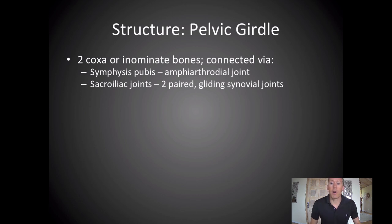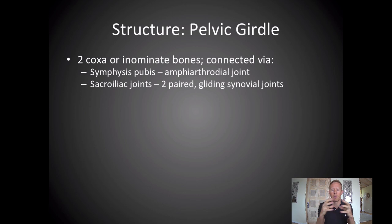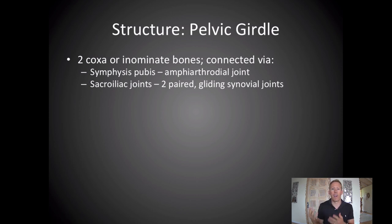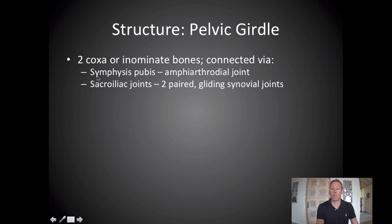When we look at the pelvic girdle and general structure, you have two coxa, or innominate bones — the two bones of your pelvis. We often think of the pelvis as one structure, but it's really two innominate bones coming together. Those bones come together on the front side at the pubic symphysis, which is considered an amphiarthrodial joint — slightly movable. It's not a synovial joint like our shoulder or hip; it's not freely movable. It's a slightly movable joint.